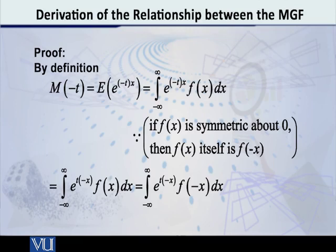This equals the integral of e raised to T multiplied by minus X into f(x). Now, if your PDF f(x) is symmetric about 0, then f(x) itself is equal to f(-x). So we will put it in the right-hand side. So now what do we have? We have the integral from minus infinity to infinity, e raised to T into minus X into, instead of f(x), f of minus X, dx.